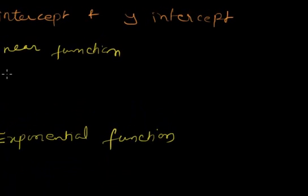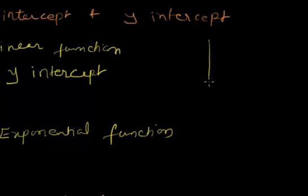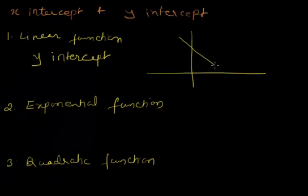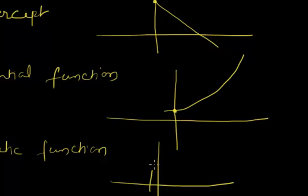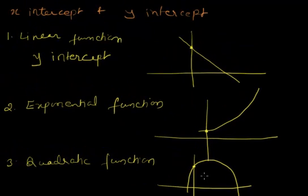If I want to see what is the value of y-intercept for all these equations: for a linear function, it's a point on the y-axis where the graph intersects it. The exponential function can be increasing or decreasing. For a quadratic function, the graph can also be increasing or decreasing. So the point on the y-axis where the graph intersects the y-axis is the y-intercept.